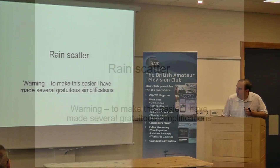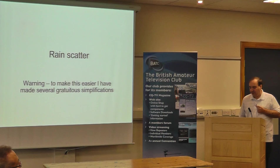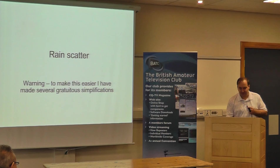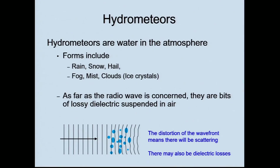Moving on to rain scatter. Hydrometeors — basically water in the atmosphere — include things like rain, snow, hail, fog, mist, and clouds, which are ice crystals. As far as the radio wave is concerned, these are bits of lossy dielectric suspended in air, with various different amounts of loss depending on the temperature. Ice has very low loss; liquid water is quite high loss. What they cause is distortion of the wave front, and if you've got distortion of the wave front, that means there must be scattering — and that scatters energy.